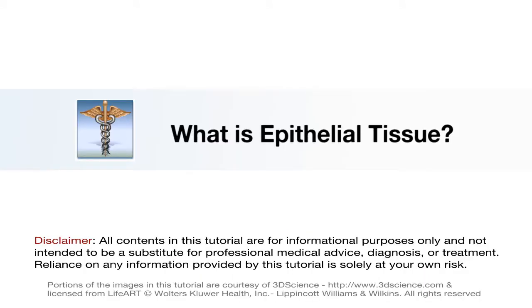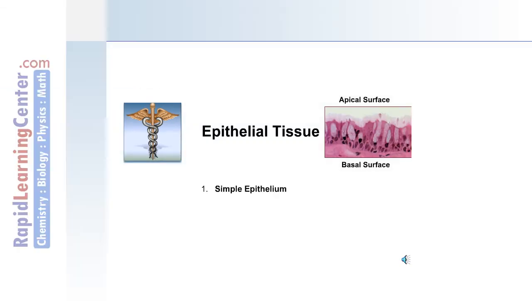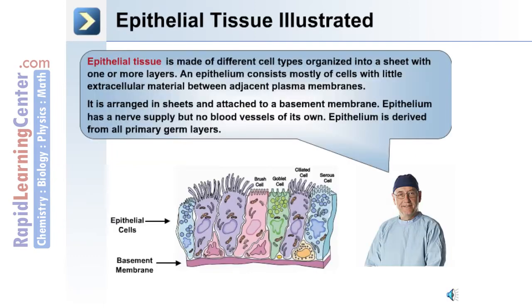Now I'll move on to discuss the second major tissue type in the body: epithelial tissue, including simple epithelium and stratified epithelium. Epithelial tissue is made up of different cell types organized into a sheet with one or more layers. It consists mostly of cells with little extracellular material between adjacent plasma membranes, and it is arranged in a sheet attached to a basement membrane.